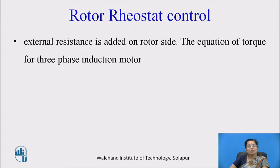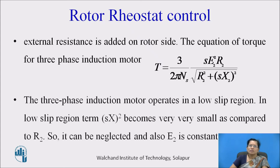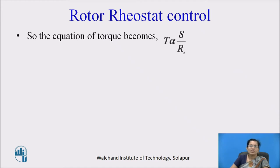External resistance is added on the rotor side. The torque equation is given as T = (3 / 2πNs) × (s·E2² · R2) / √(R2² + (s·X2)²). The three-phase induction motor operates in the low slip region, and in the low slip region, s·X2² becomes very small compared to R2. Since s·X2² is very small because s is very less, we can neglect it, and E2 is also constant.